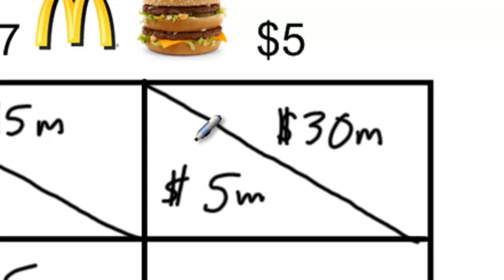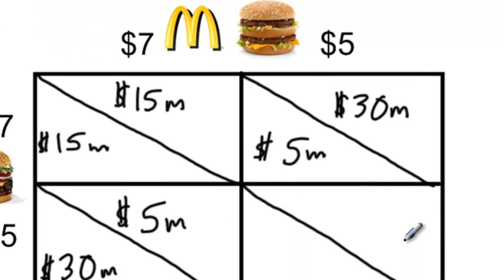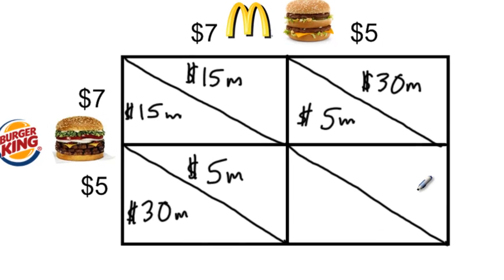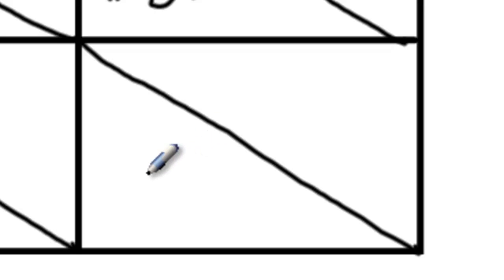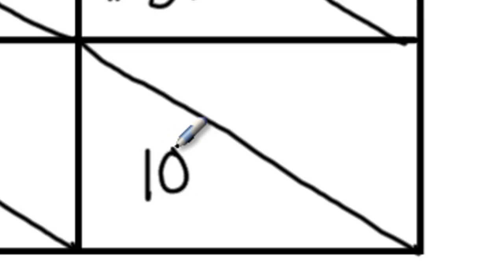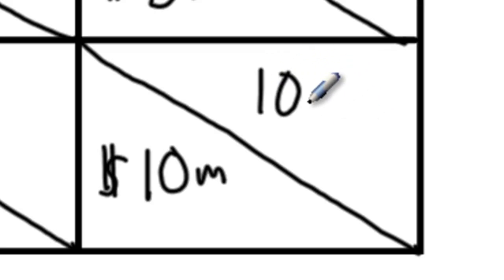Finally, what if both firms reduce their price to five dollars? If both firms lower their price, we can assume that both firms will earn lower economic profits than they would have if they had both kept their price at seven dollars. Both firms will continue to split the market fifty-fifty, but economic profits will be lower — only ten million dollars apiece.